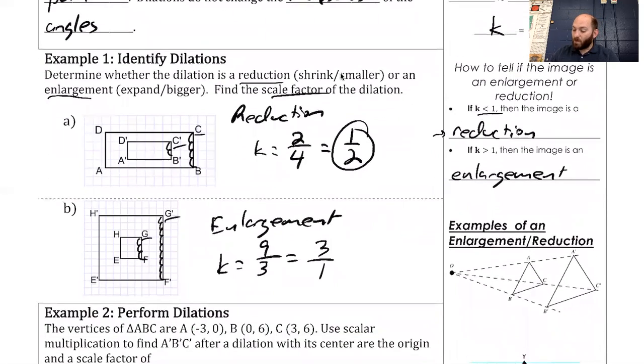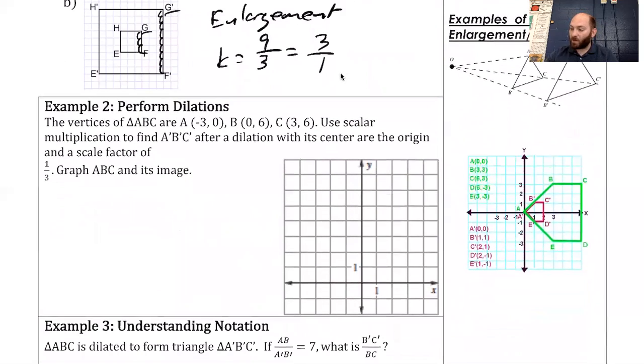We might do it on a coordinate grid. You can see these are a couple of other ways that might look. Here's my center of dilation. Here's my original pre-image. Then it gets enlarged by a certain amount. These distances are also in that scale factor idea. Here's another one with a pentagon. That larger pentagon got shrunken down, got reduced to this one. That center is right here.